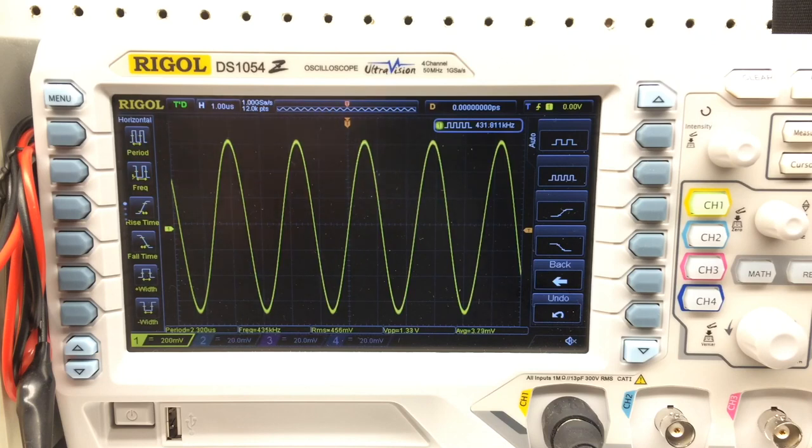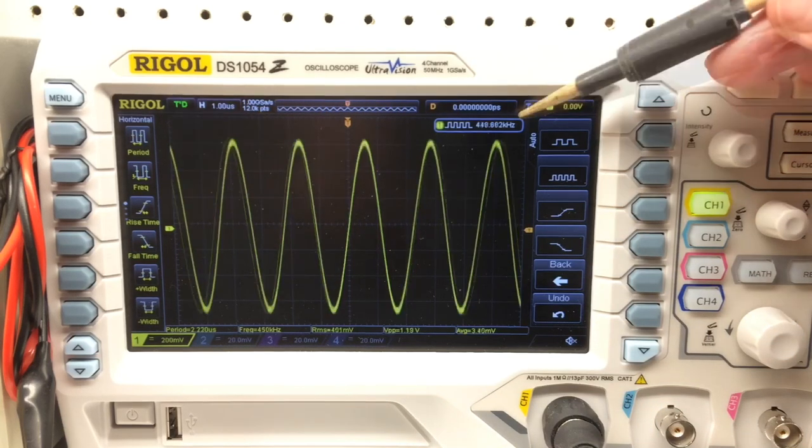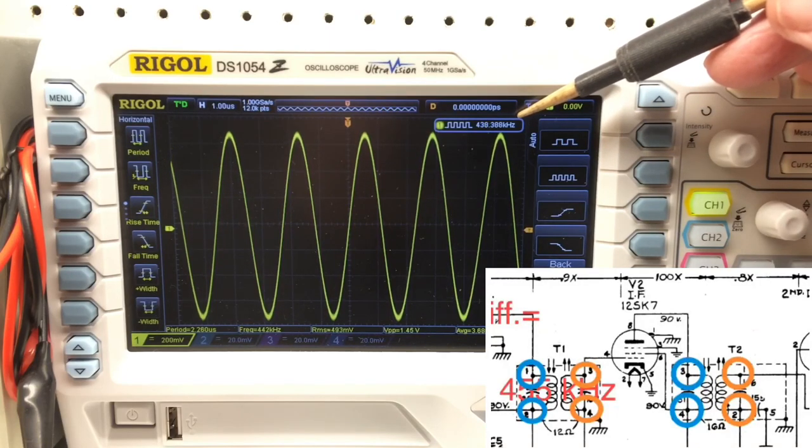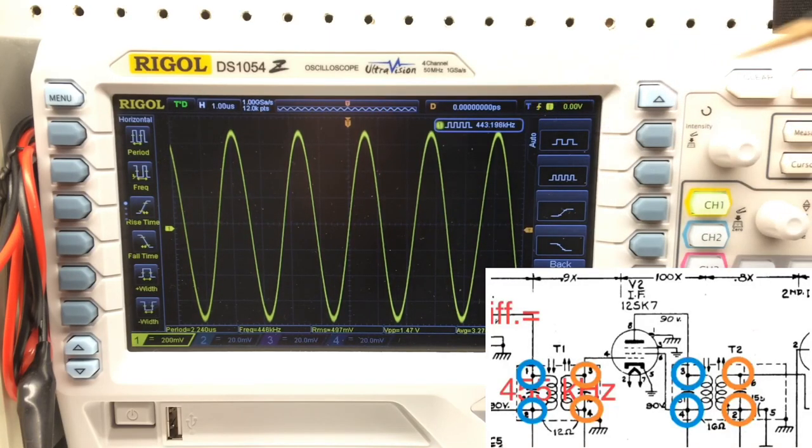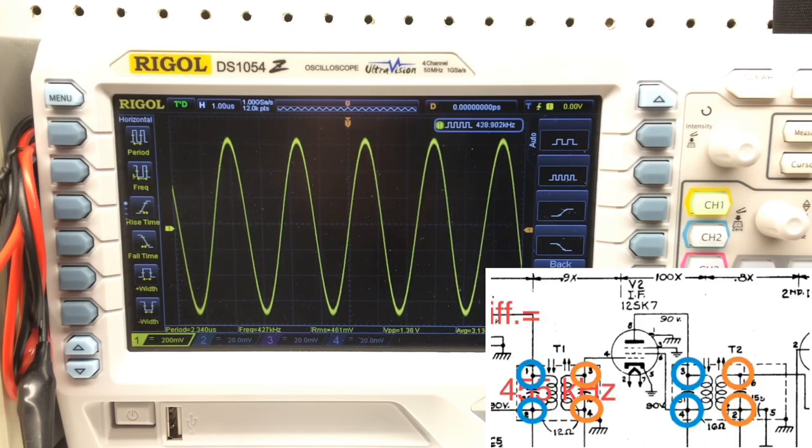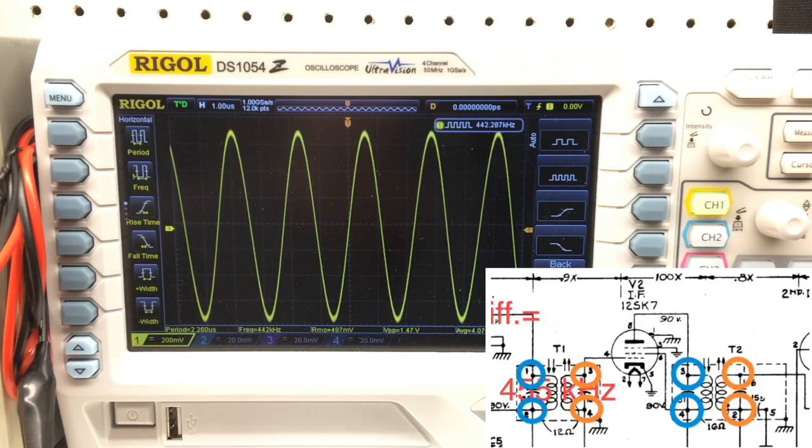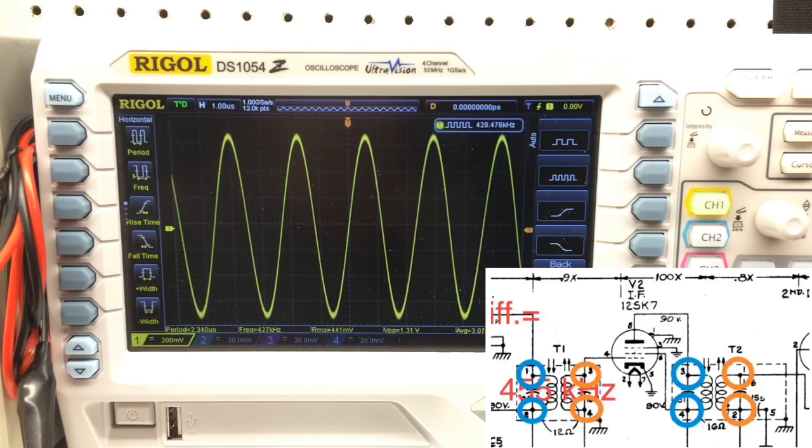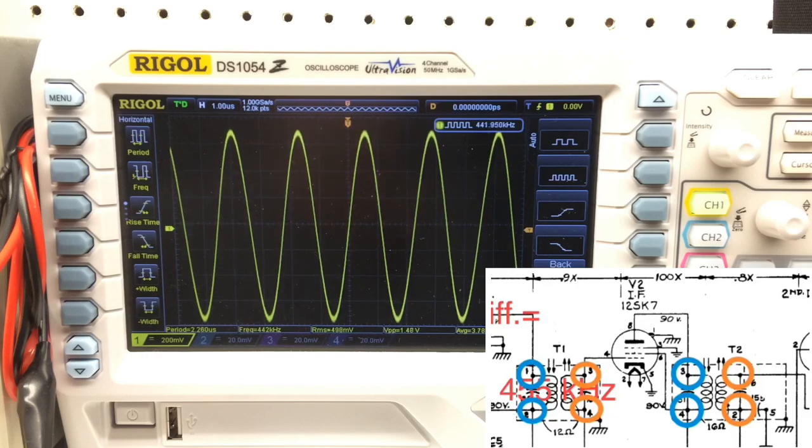I was just looking to make sure the ratio of gain between input and output was very close to a one-to-one relationship. Same exercise here for the transformer T2, as you can see with the connection points indicated again in blue and the output going to the oscilloscope in orange. You will notice this particular transformer shows it resonating at a little higher frequency. We'll see what the condition of these transformers look like when we get to the IF alignment after the capacitors and resistors are replaced as needed.